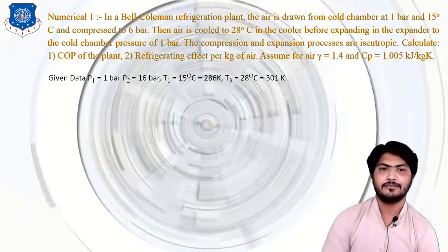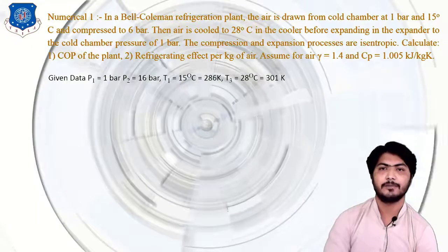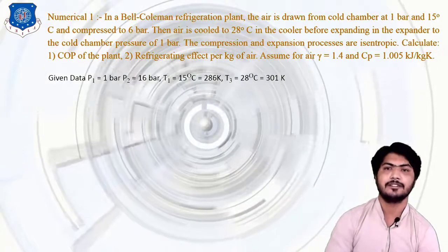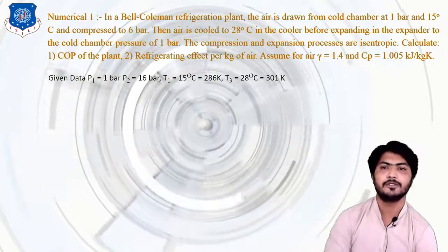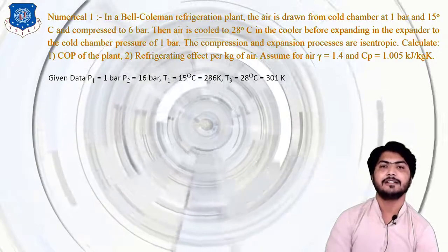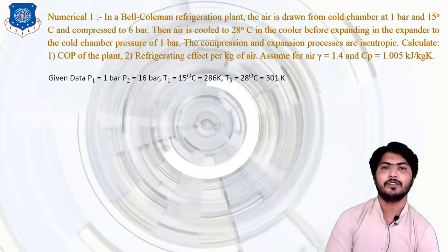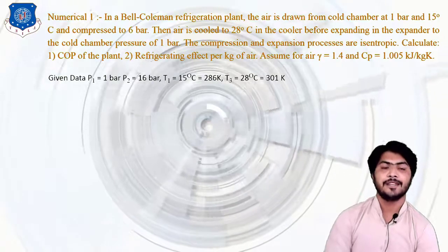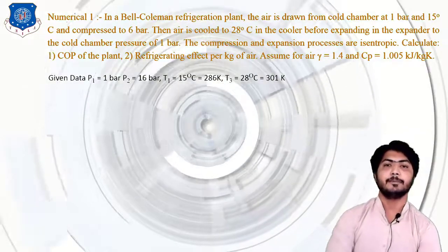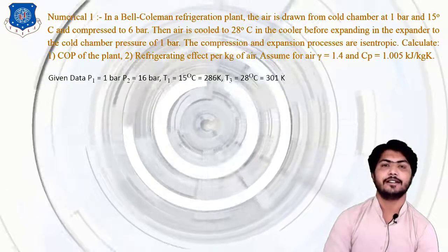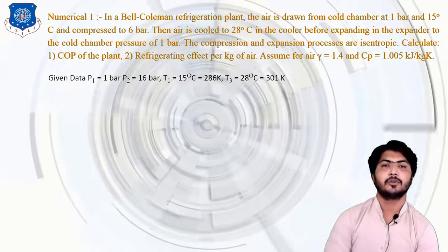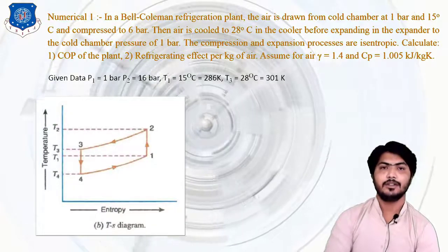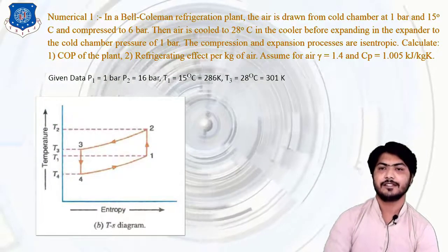Given data: P1 (initial pressure before entering the compressor) = 1 bar; P2 (after compression) = 6 bar; T1 = 15°C = 288 K (adding 273); T3 (temperature after the cooler) = 28°C = 301 K. All this data is shown in the T-S diagram. Without the T-S diagram we cannot solve the numerical, as mistakes can be made.